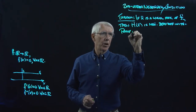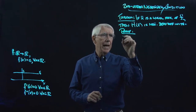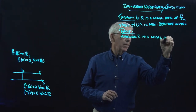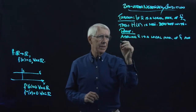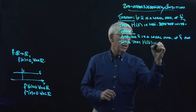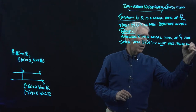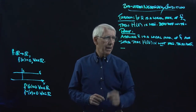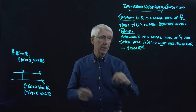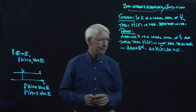Let's give a proof. We'll go straight to the general case. Assume that X̄ is a local maximum of F, and suppose that H(X̄) is not negative semi-definite. Not negative semi-definite means there exists some δX in ℝᴸ such that δX' H(X̄) δX is positive.